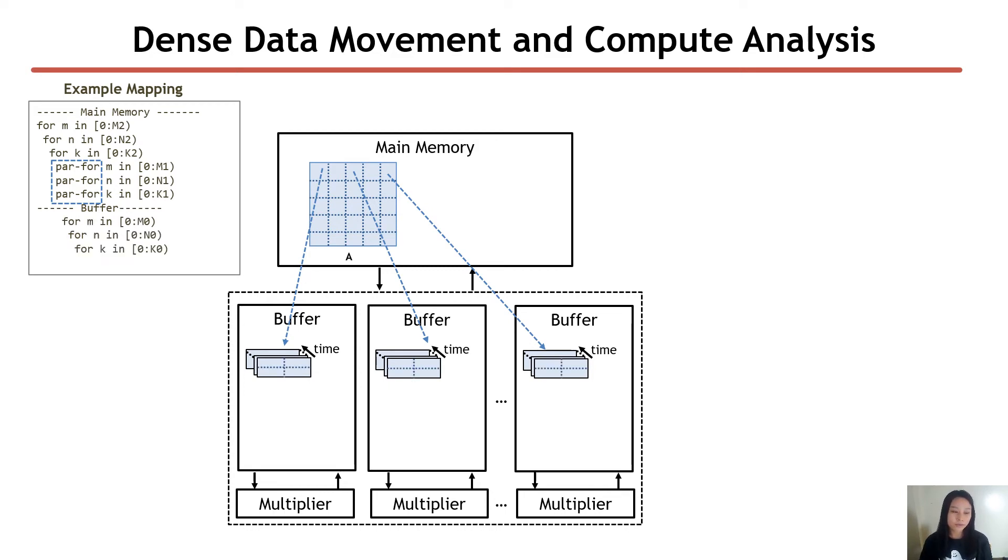We also have some for loops for the buffer level where these for loops will tile the smaller subtensor in the buffer. All of these tiles will be sent to the multiplication unit to perform the computation defined by the mapping.